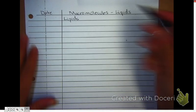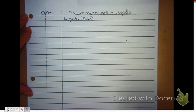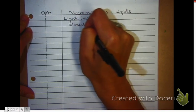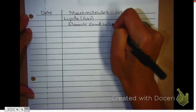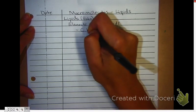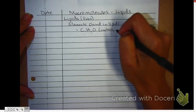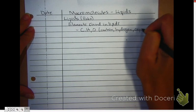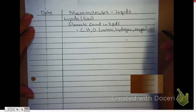Lipids are typically known as fats. So we'll put that in parentheses. Not all lipids are fats, but it's what you'll remember. The elements found in lipids are C, H, and O. That is carbon, hydrogen, and oxygen, not in a ratio.